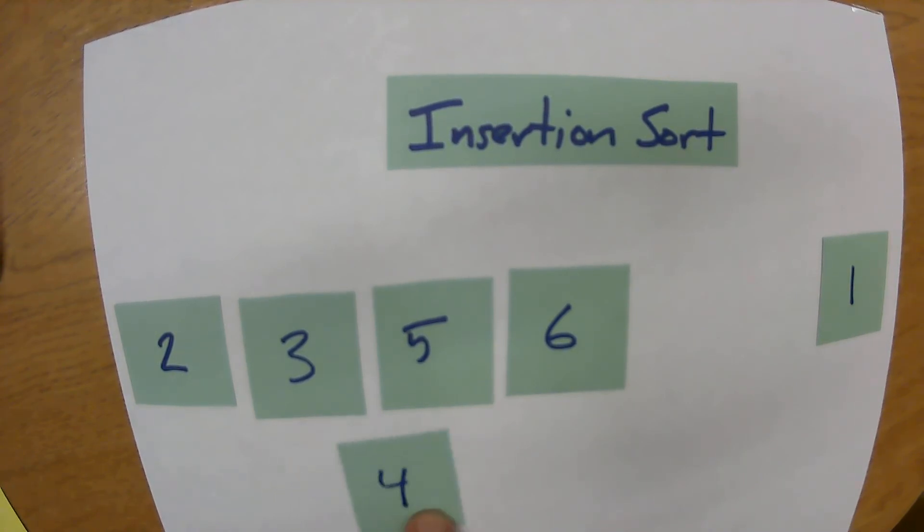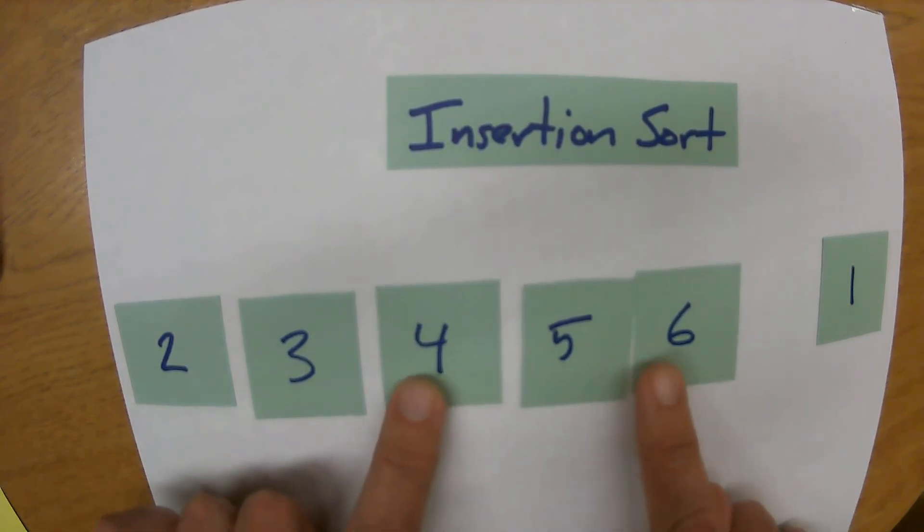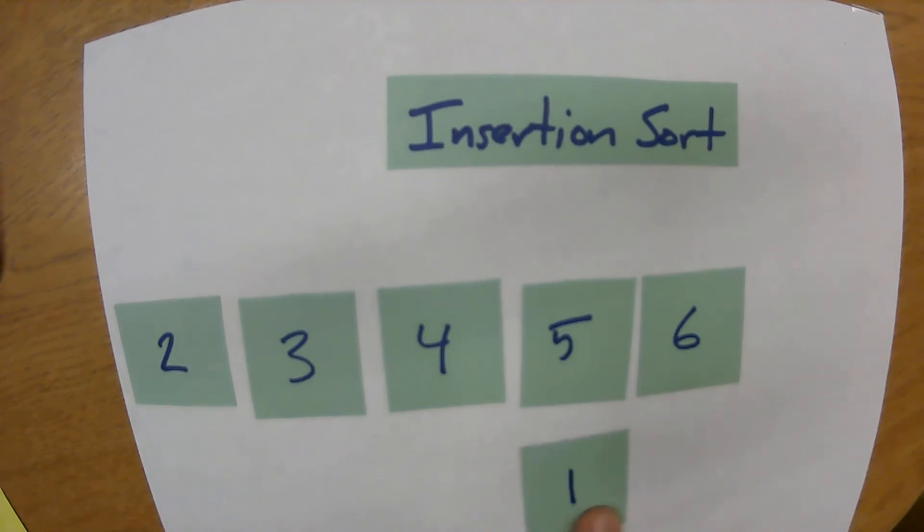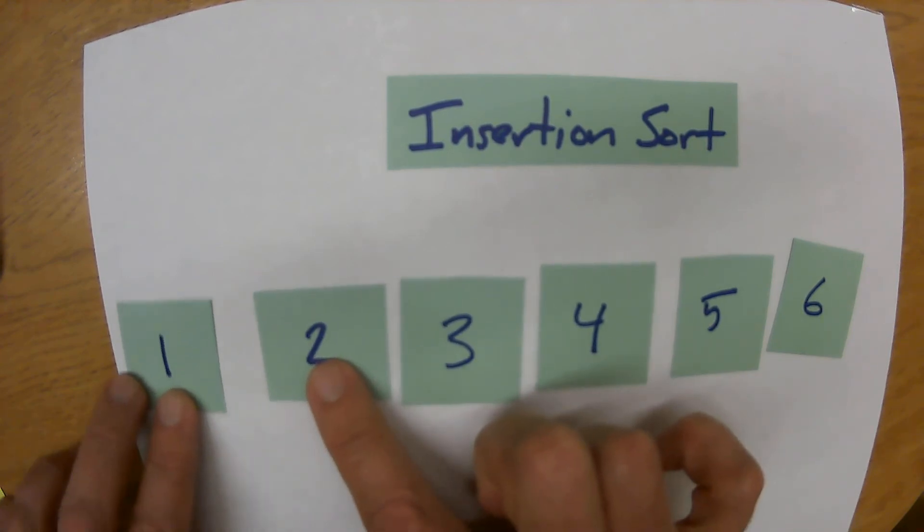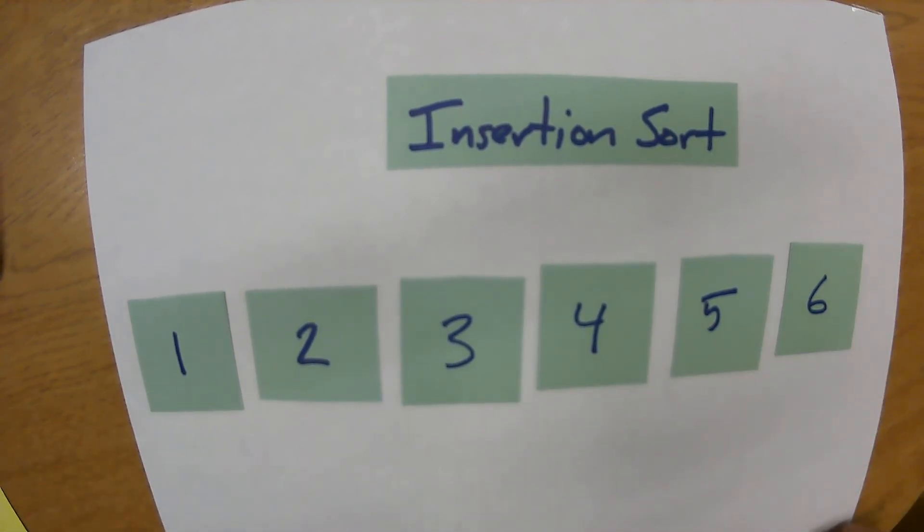So as soon as you find a value that this is larger than then you know the insertion point. And the one is smaller, smaller, smaller, smaller than everybody, so now we're at the end and the whole list has to slide over and then we have a sorted list.